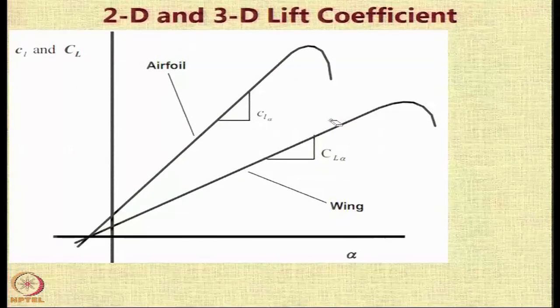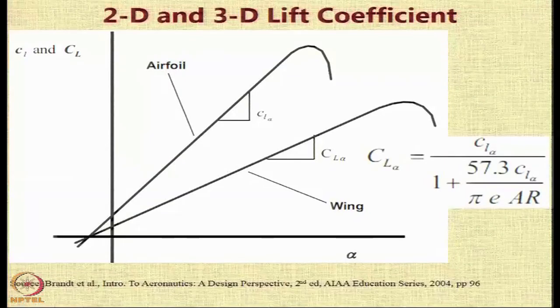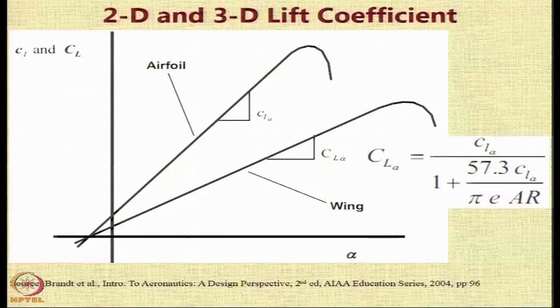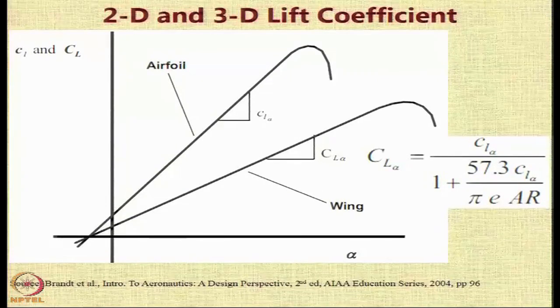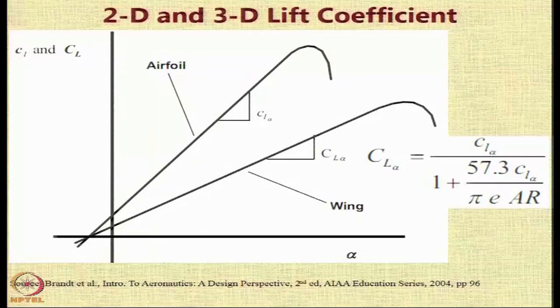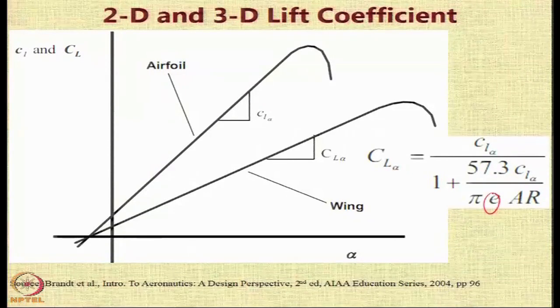Our task is to estimate the 3d lift coefficient of an aircraft whose geometry is made available to us and the simple relationship between the capital C l alpha and small c l alpha is expressed in terms of the wing aspect ratio and the Oswald efficiency factor E as shown in this equation.